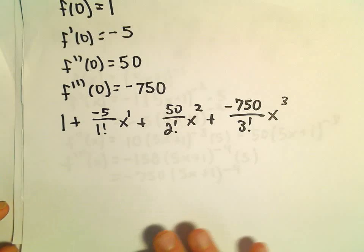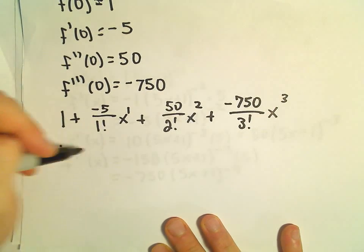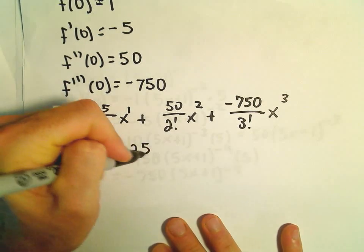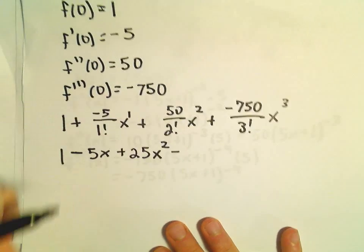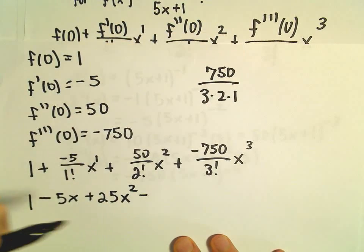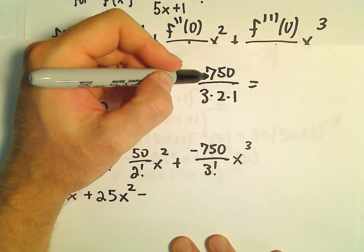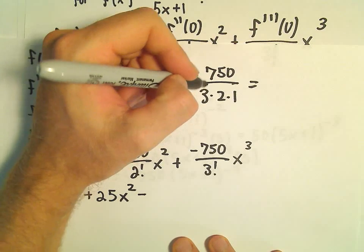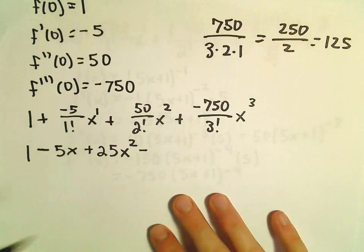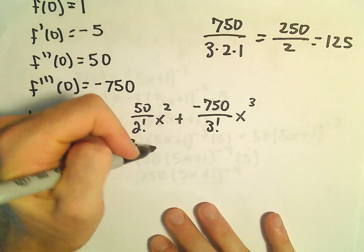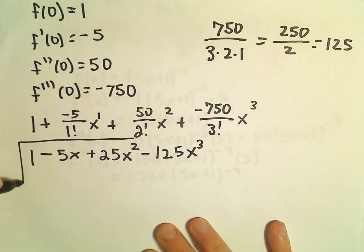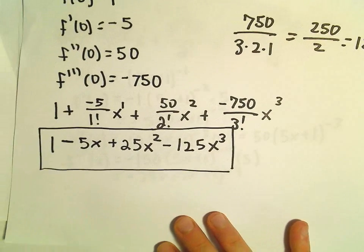Now we just simplify this down. We get 1 minus 5x. 50 over 2 is positive 25, so plus 25x squared. Then 750 over 3 factorial: 3 goes into 750 giving 250, divided by 2 gives 125. So minus 125x cubed. And now we have our third degree Maclaurin polynomial.